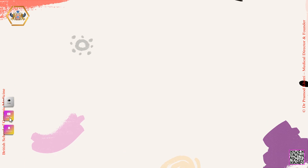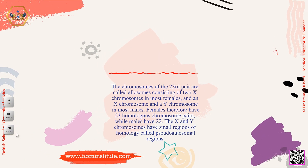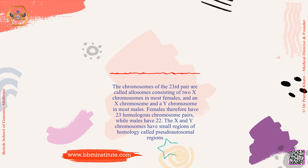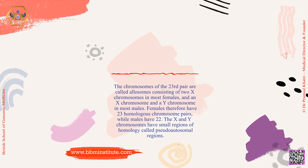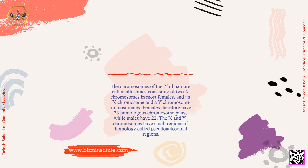The chromosomes of the 23rd pair are called allosomes, consisting of two X chromosomes in most females, and an X chromosome and a Y chromosome in most males. Females therefore have 23 homologous chromosome pairs, while males have 22. The X and Y chromosomes have small regions of homology called pseudo-autosomal regions.